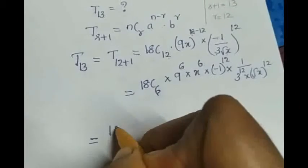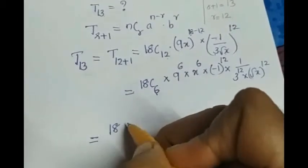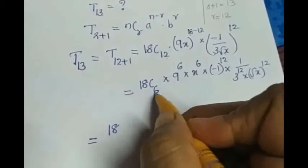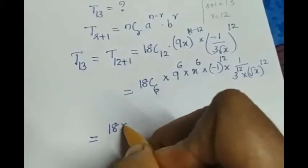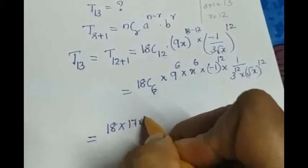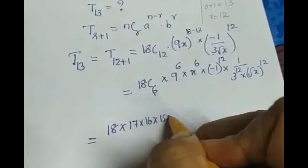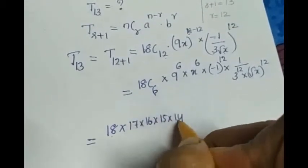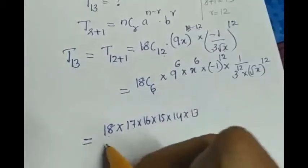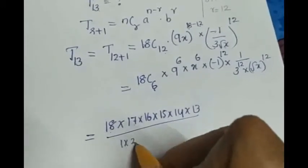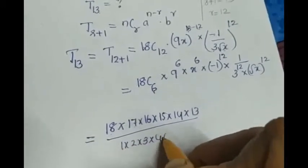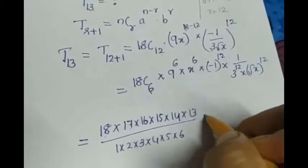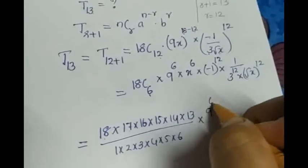So we will simplify. 18C6. So we have to write the numbers in descending order and we have to write 6 integers. So 18 × 17 × 16 × 15 × 14 × 13 divided by 1 × 2 × 3 × 4 × 5 × 6 into 9^6 into